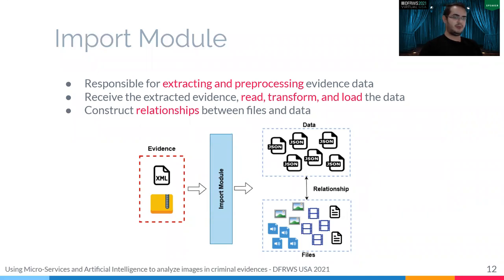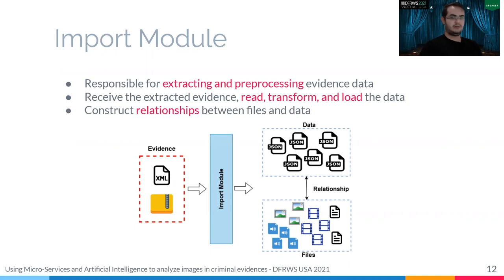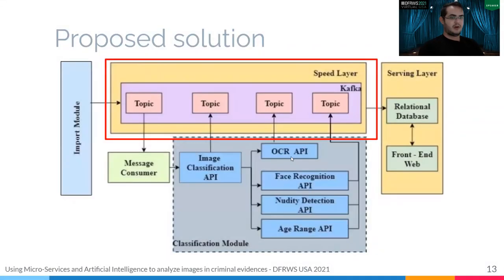The import model is responsible for extracting and pre-processing evidence data. In this image, we can see the steps realized by the model. Initially, the model receives the evidence composed of a compressed file containing XML files with all information extracted from the device, and a directory with all files such as images, videos, audios, and notes. The import model transforms and reads this data and returns the relationship between files and file information, saving the data in a Hadoop file system and a relational database.